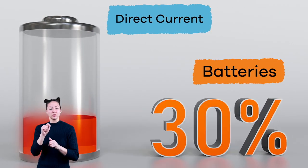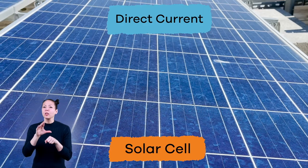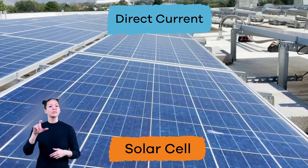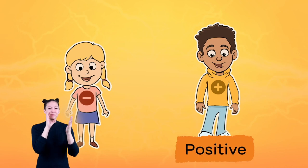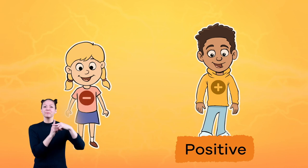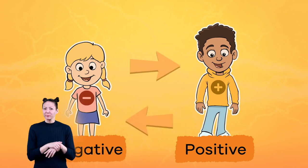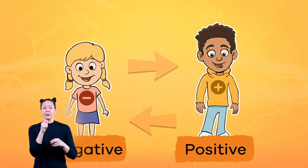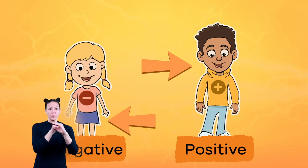Direct current is the power that comes from batteries, fuel cells, and solar cells. Batteries have a plus and minus sign on them. The plus sign stands for positive and the minus sign stands for negative. The electric current in the batteries always flows in the same direction and in a loop from the positive to the negative side.